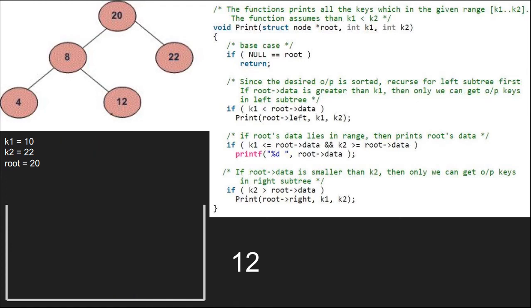Execution for root equal to 20 is resumed. Now, we check if 20 lies between k1 and k2. As it is true, we print 20. Then, we check if k2 is greater than 20. As it is true, we pass the left child of 22 which is null.